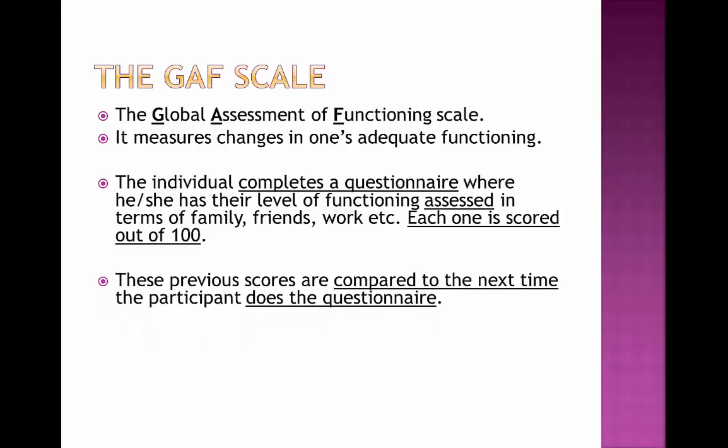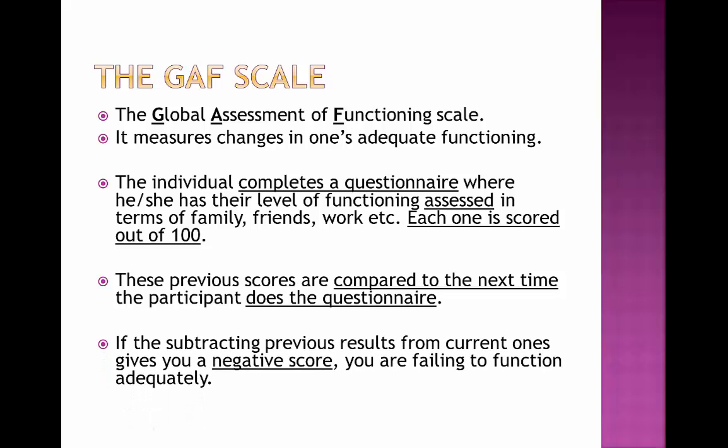Previous scores are compared to the next time the participant completes the questionnaire. You then subtract the previous results from the current ones, and if this gives you a negative score, you are failing to function adequately. For example, if you score 80 the first time and 50 the second time, subtracting 80 from 50 gives you minus 30, meaning you are beginning to fail to function adequately and are becoming abnormal.